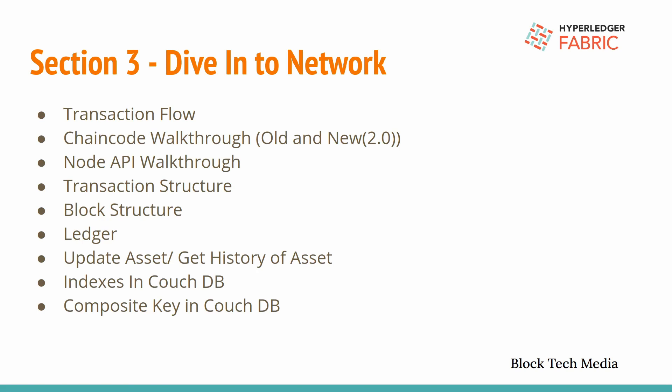The next part is chain code. Chain code is nothing but a smart contract. We are going to implement the chain code in both ways, because in Fabric 2.0 they have introduced the contract API, which is a newer way to implement chain code. There are some additional advantages over the previous approach, including writing multiple smart contracts within a single chain code. We will go through the chain code in the older way as well as the newer way.